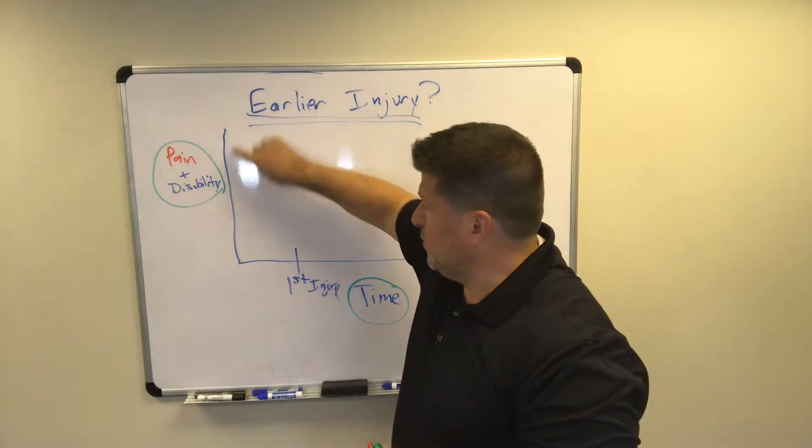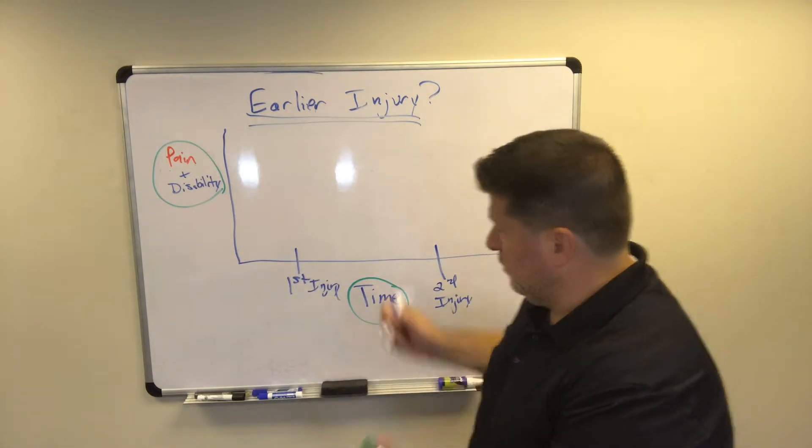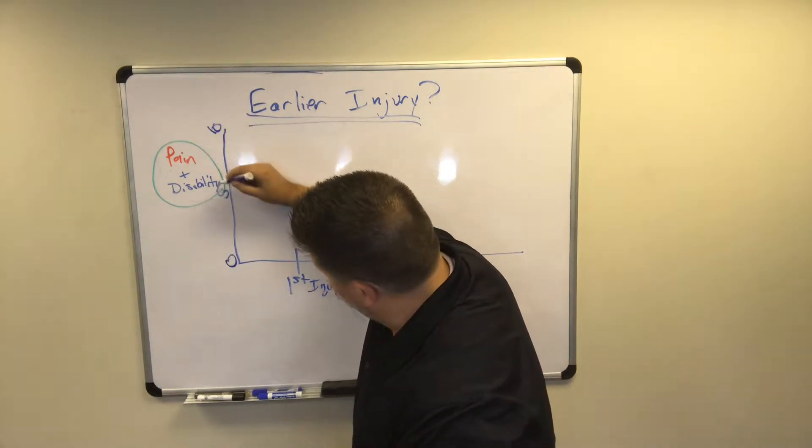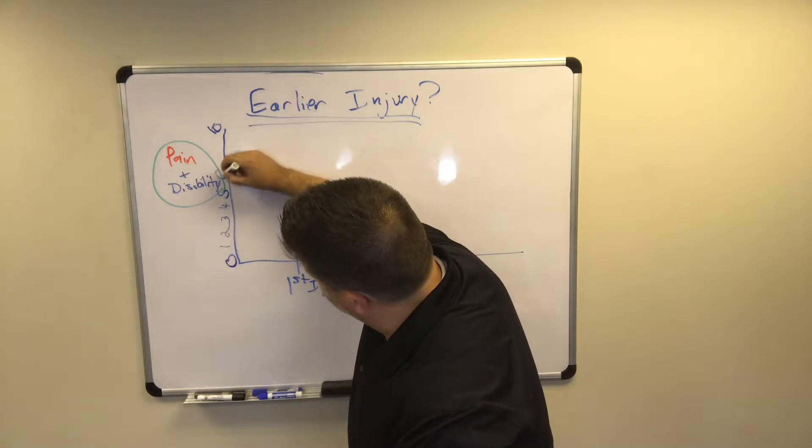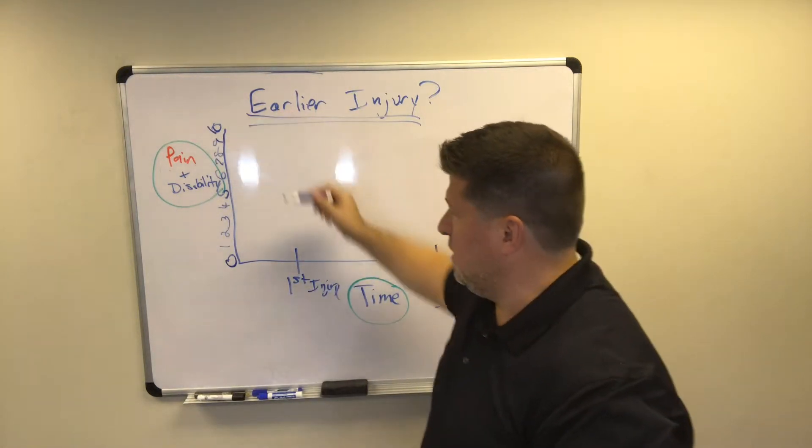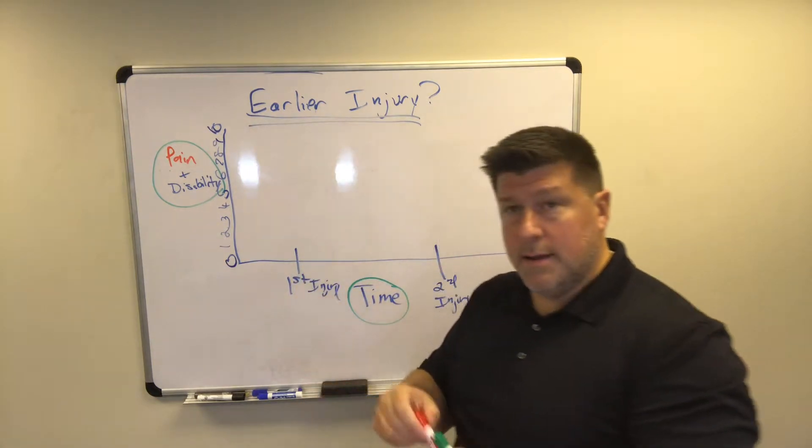So this is your pain level. Let's say the pain level, here's 0 and here's 10 and there's 5, 1, 2, 3, 4, 5, 6, 7, 8, 9. So the higher the pain, pain will be in red.